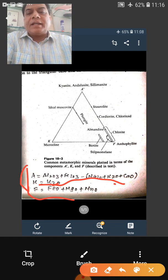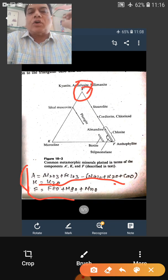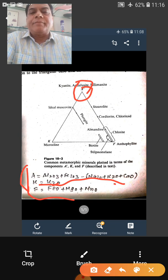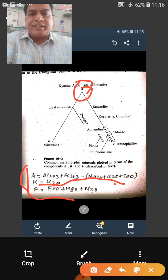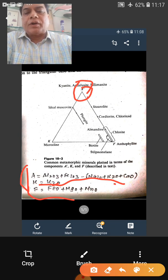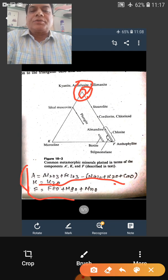If you will plot, you will find that again this is Al2O3. This corner will represent Al2O3, means your kyanite, andalusite, sillimanite such minerals, Al2O3 rich minerals or Al2O3 bearing minerals will be plotted on the corner on the top side.